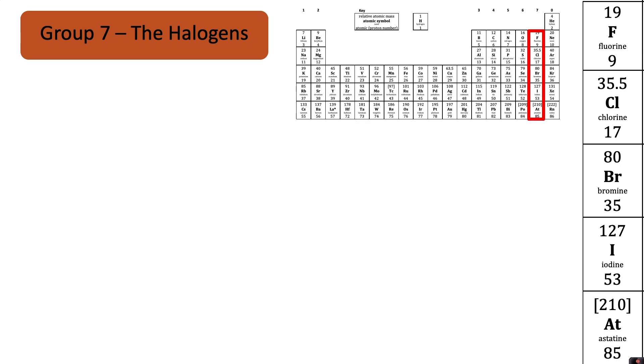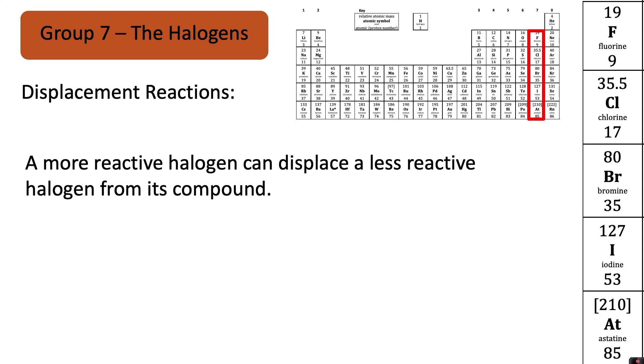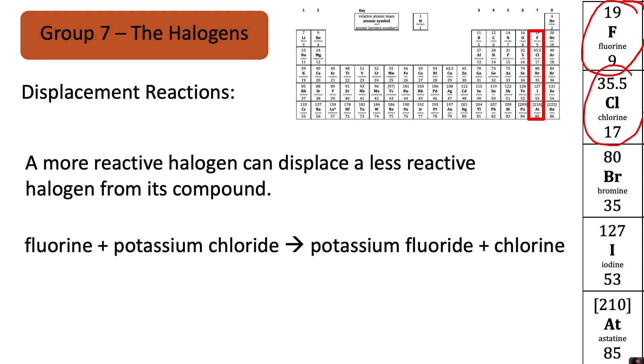The halogens in group seven are involved in displacement reactions. A more reactive halogen can displace a less reactive halogen from its compound. For example if you react fluorine with potassium chloride it will make potassium fluoride plus chlorine. You can see on the right hand side that fluorine is higher than chlorine in group seven therefore fluorine is more reactive than chlorine. So this is why fluorine will displace the chloride from this compound and it swaps around so you end up with potassium fluoride and the chlorine being kicked out on its own.